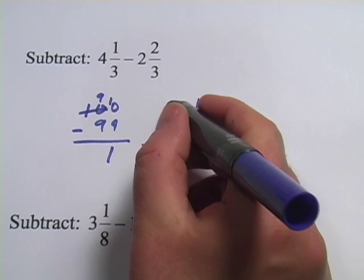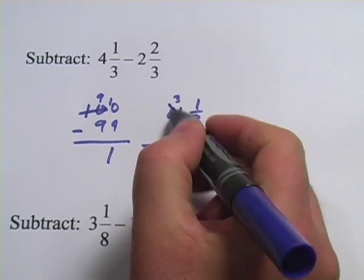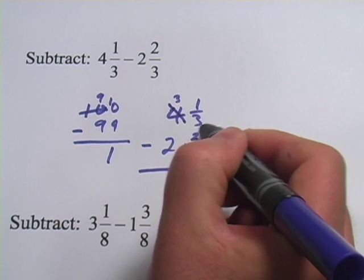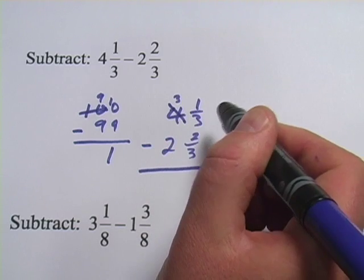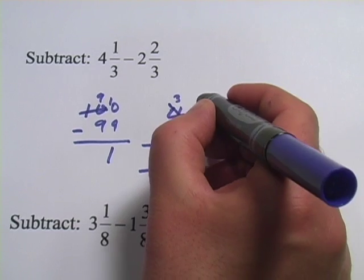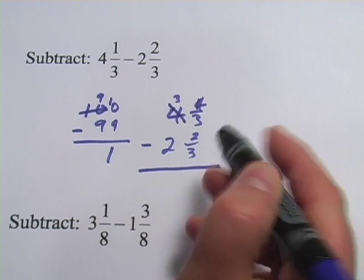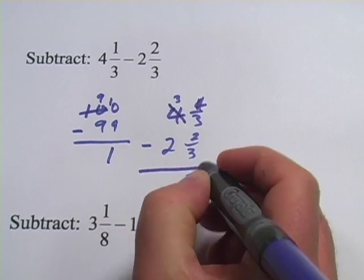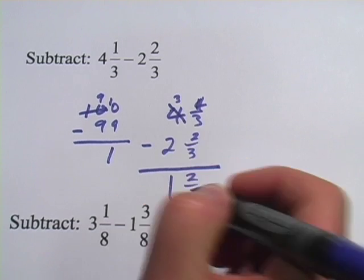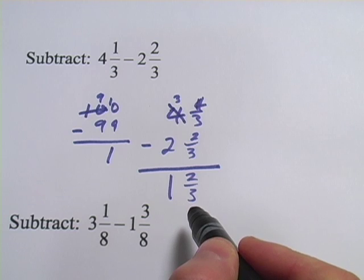So what I'm going to do is take one away here. I'm going to make this a three, and one whole here is three-thirds because one is three-thirds. So we're going to add three-thirds, which makes this four-thirds. Now, four-thirds minus two-thirds is two-thirds. And I have three minus two is one. So four and one-third minus two and two-thirds is one and two-thirds.